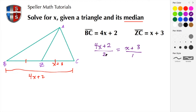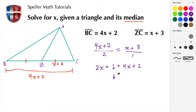I'm going to cross multiply to solve for X, multiplying 2 by these two terms. I end up with 2x plus 6 is equal to — since 1 times the numerator is just the numerator — 4x plus 2. Now I'm going to combine like terms, moving the 2x to this side by subtraction.